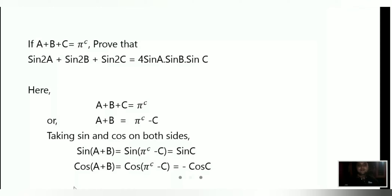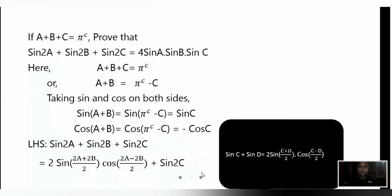Similarly, cos(A+B) equals cos(pi minus C), and cos(180° - C) equals minus cosC. So we have derived two key results: sin(A+B) = sinC, and cos(A+B) = -cosC.